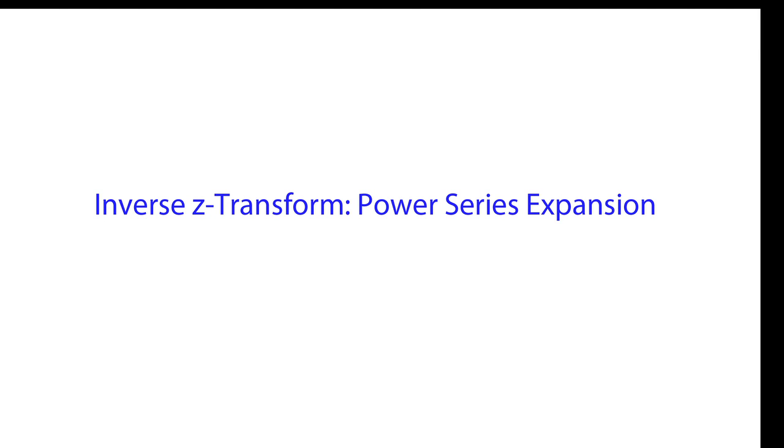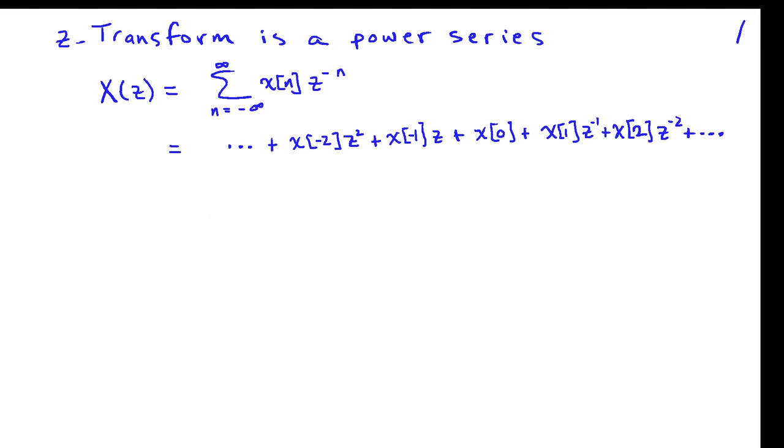One particular method for inverting the Z-transform is to write the function we wish to invert as a power series expansion. The reason this is effective is because the Z-transform itself is a power series in Z.